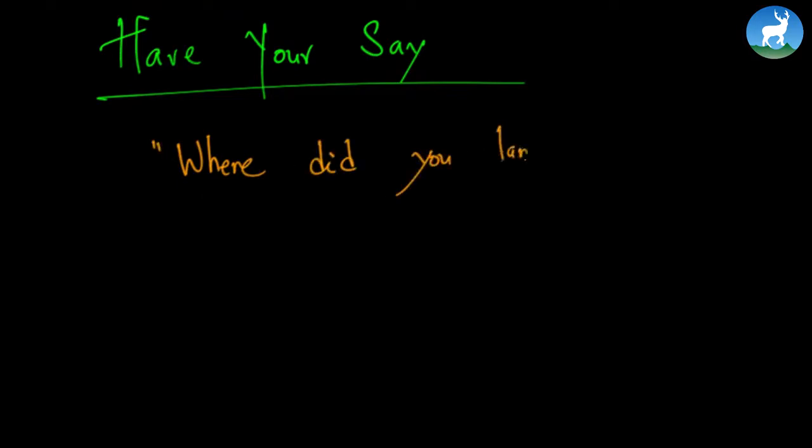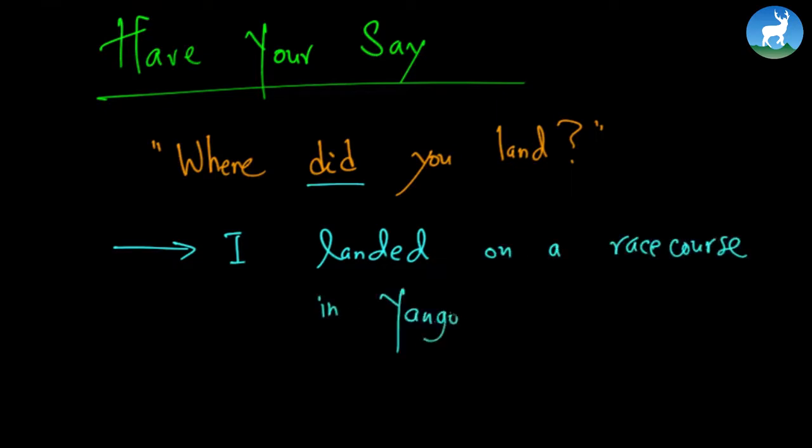Here's something called Have Your Say, which is in fact the speaking portion of the book. We are going to learn how to give Amy's answers to these questions. First question is, where did you land? So somebody, maybe a reporter is asking this question to Amy and as Amy you have to answer. You should say something like, I landed on a race course in Yangon. When the question is in V2, make sure your answer is also in the second form of the verb, simple past tense. Questions in simple past should be answered in simple past tense.